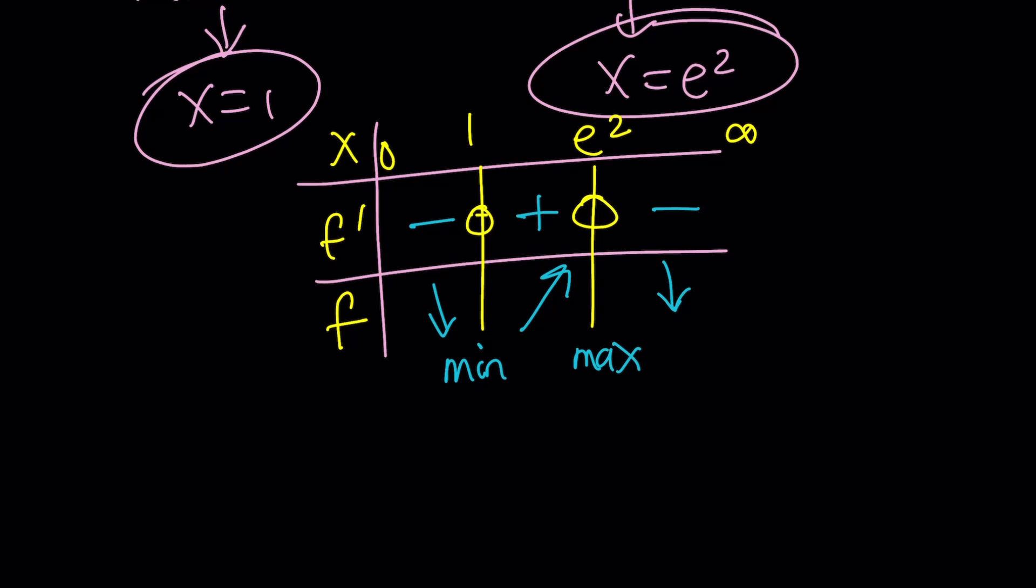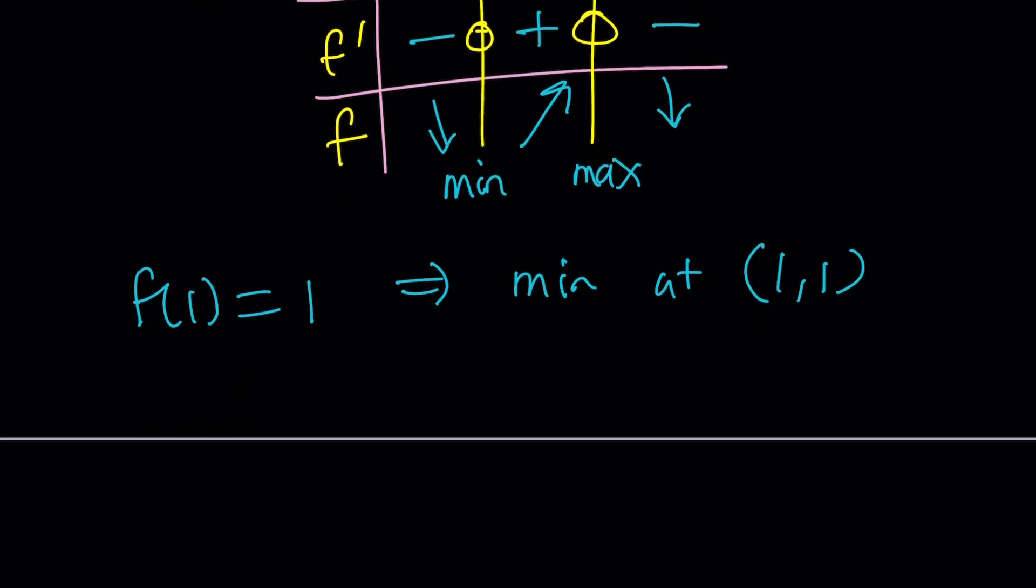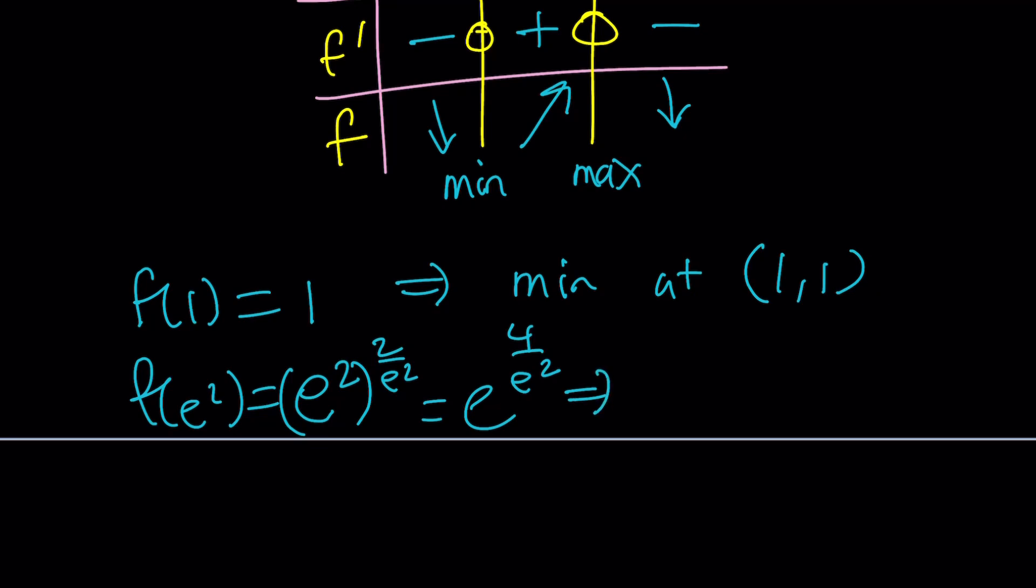Now, let's go ahead and replace x with 1. So f of 1 is just going to be 1 because 1 to the power of anything. Remember that? So we have a min at 1, 1. And then if you replace x with e squared. Remember, e squared was another critical point. We're going to get e to the power 2 to the power 2 over e squared. And that's e to the power 4 over e squared. So, in other words, we have a maximum at e squared, comma, e to the power 4 over e squared. Such a weird number, right? And notice that e squared is greater than 4. So it's going to be e to the power of some number less than 1. Which is kind of like the root of e, which is less than e. A lot of complications, right?